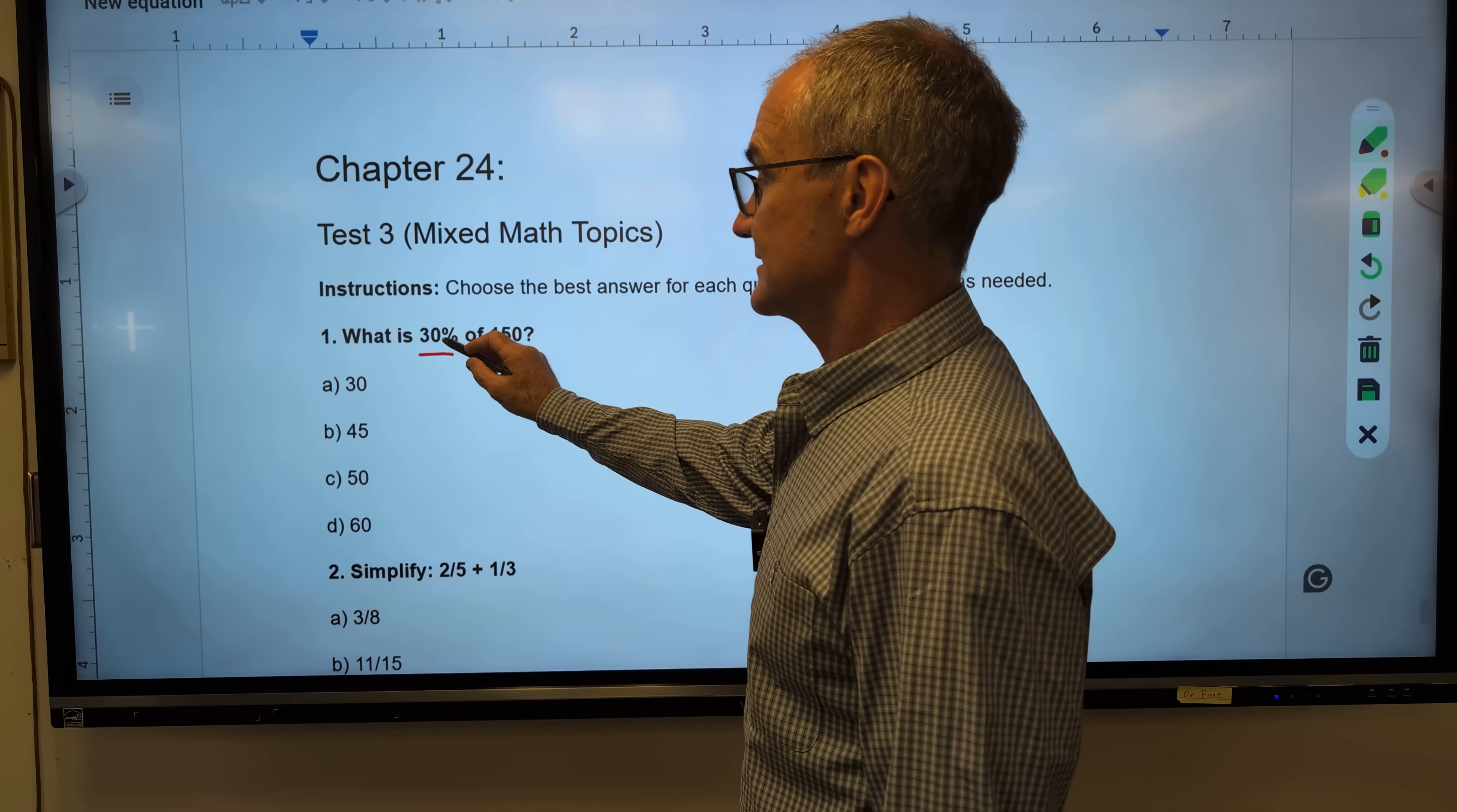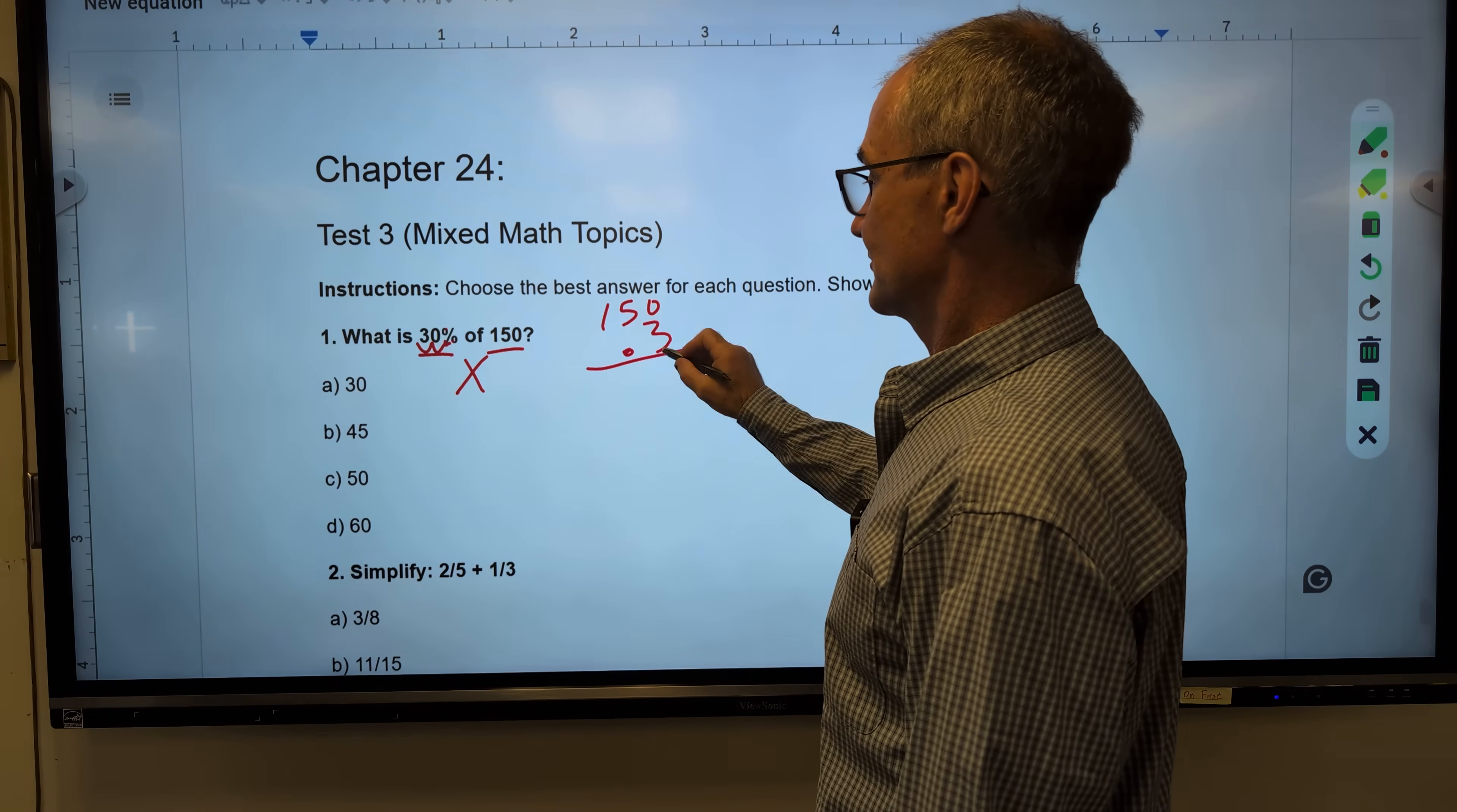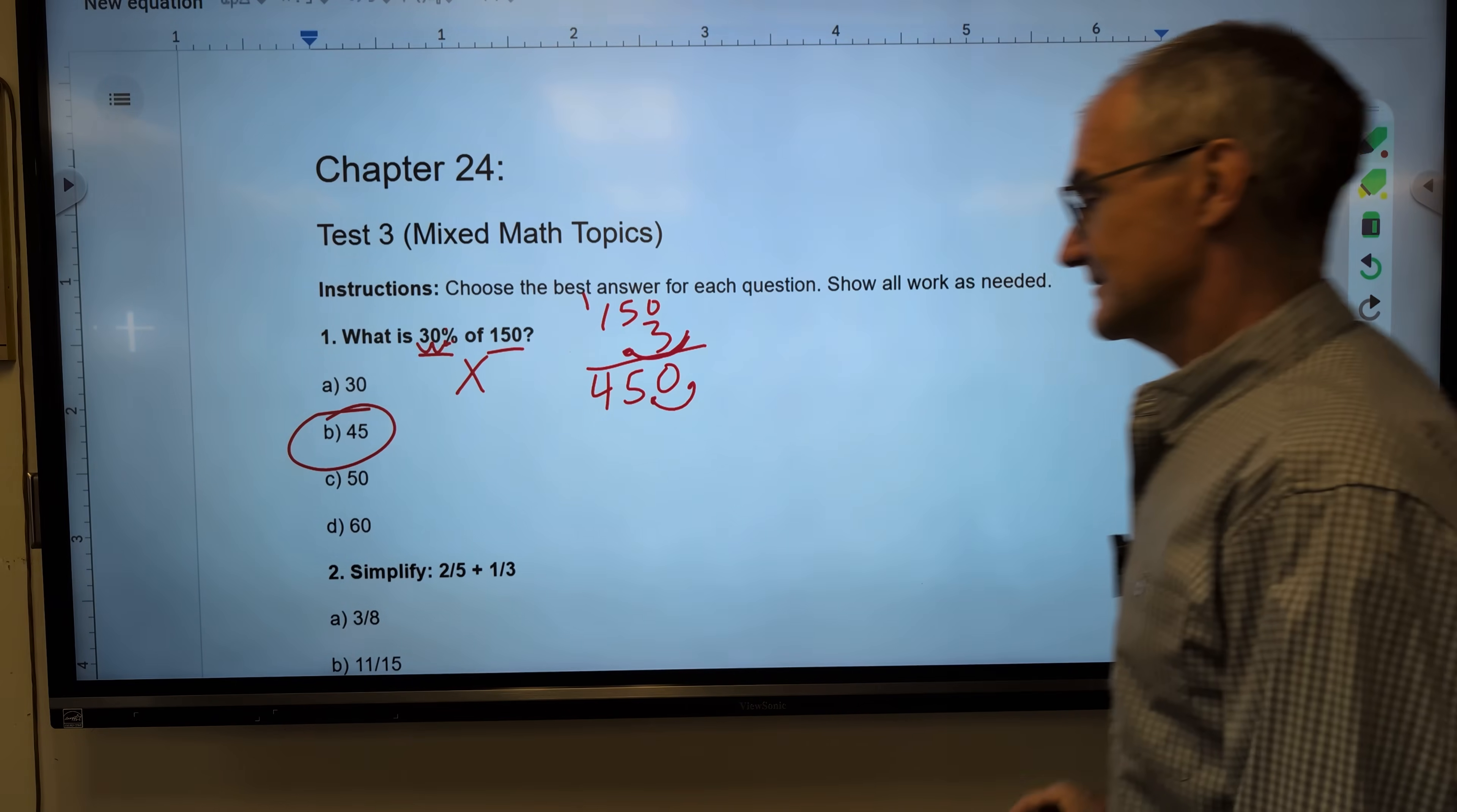30%, I think of this as a little arrow, knocking the decimal place over 1, 2, just like those two dots. So that's the same thing as 0.3. Of means to multiply 150. So what is 30% of 150? I multiply across here to go 3 times 0, 3 times 5, carry the 1, 3 plus 1, 450. Obviously that's too high. My decimal place is over 1 here, so I've got to move it over 1 here to give me 45. Correct answer, answer B, right there.